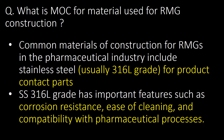What is the MOC for materials used for RMG construction? Common materials of construction for RMGs in the pharmaceutical industry include stainless steel, usually 316L grade for product contact parts. SS316L grade has important features such as corrosion resistance, ease of cleaning, and compatibility with pharmaceutical processes.